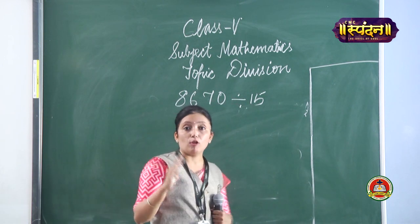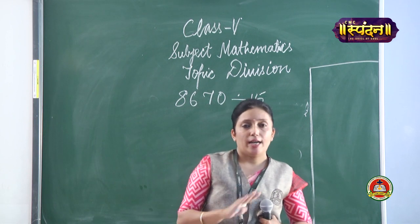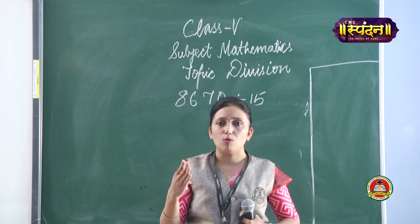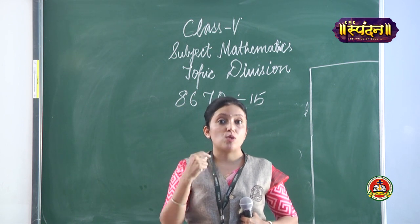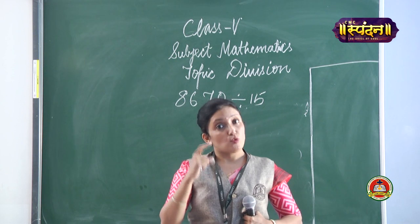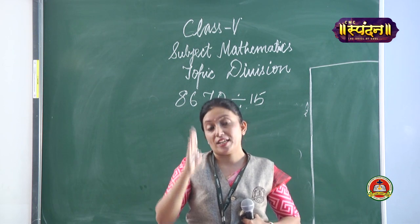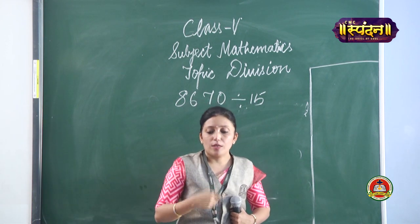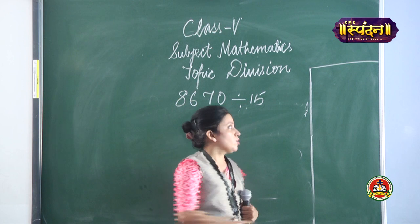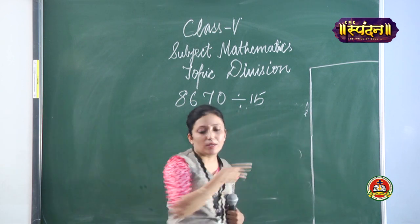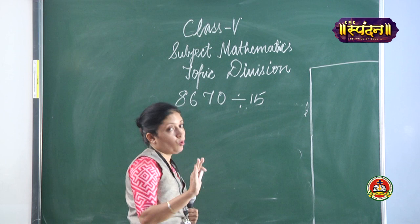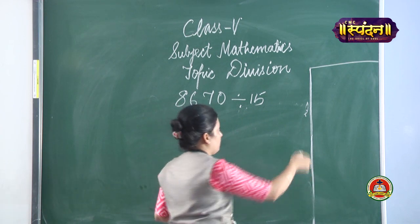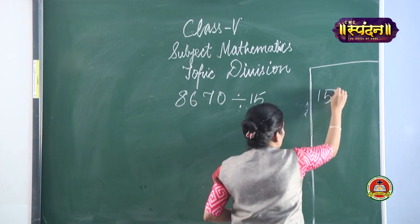For our example, we need the table of 15. Since we are in 5th standard, we should be thorough with tables at least up to 20. If you have any doubt, you can write down the table of 15 in a rough column — that will help you.